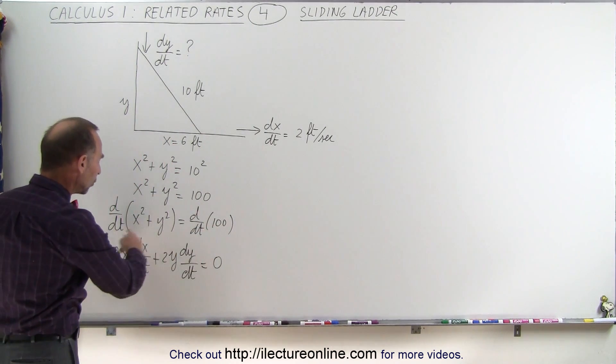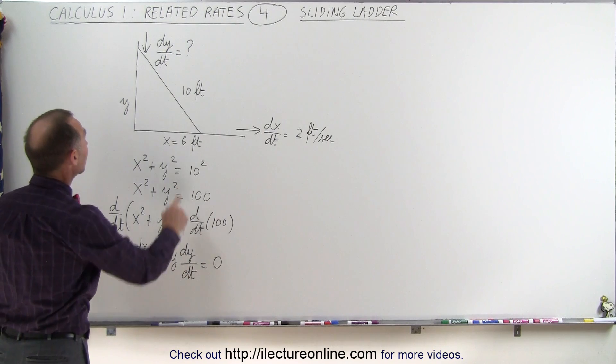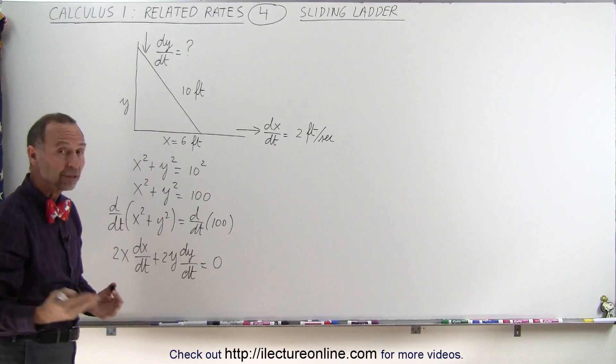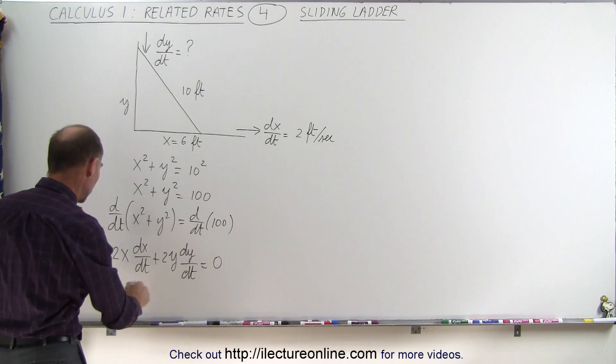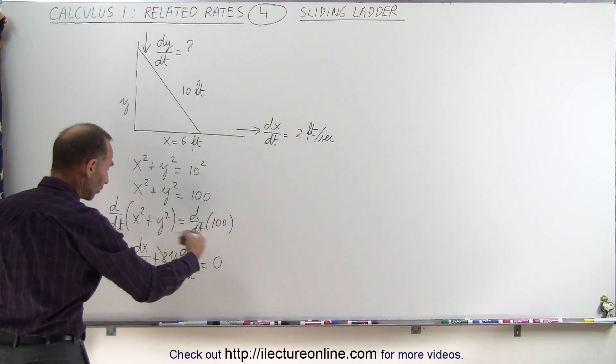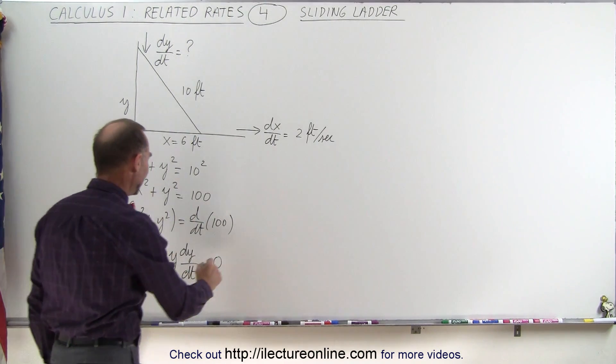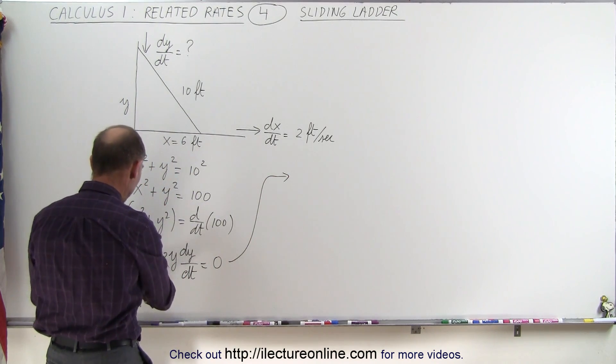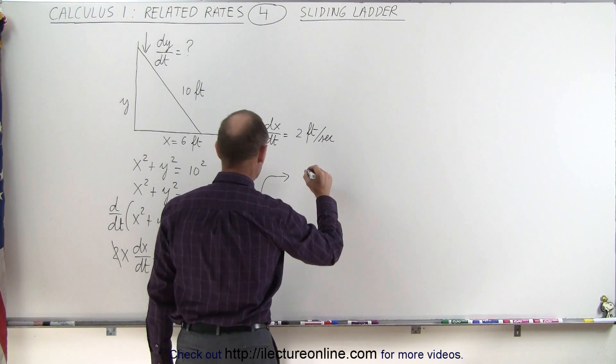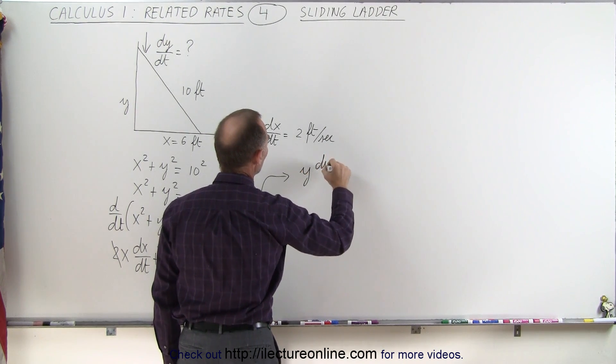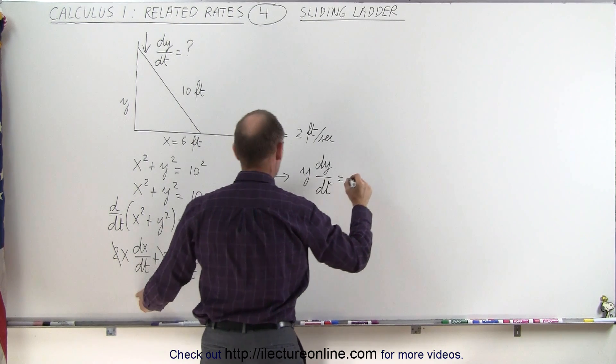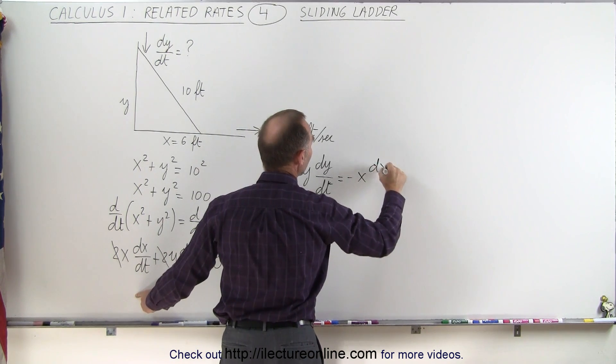Now we're going to solve this equation for dy/dt because that's what we're looking for. First, we can divide both sides by 2, so the 2's disappear. Then solving for dy/dt, we move x dx/dt across to get y times dy/dt equals negative x times dx/dt.